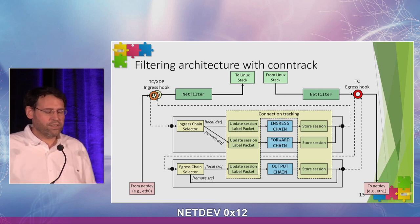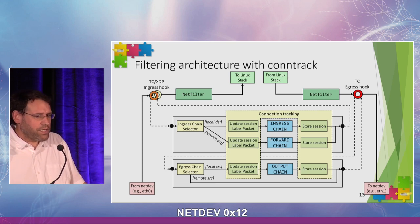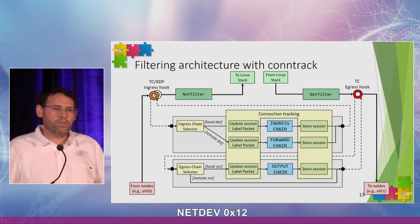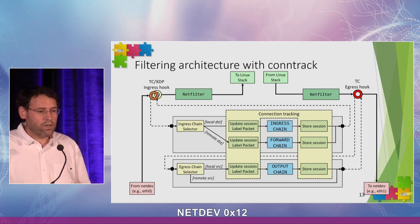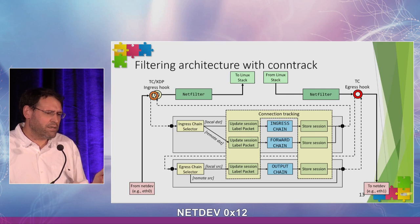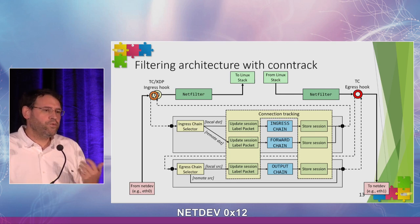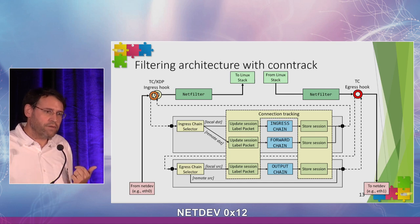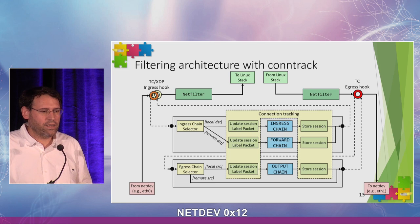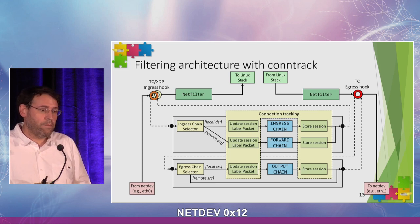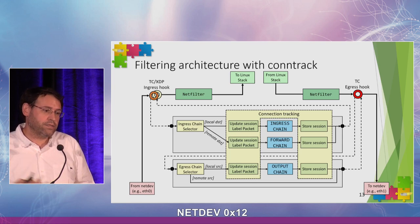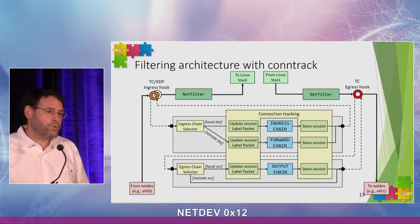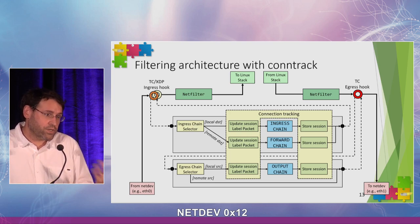When you enable connection tracking, you enable those blocks on both ingress and egress hooks. Even if you filter only on ingress traffic, connection tracking must work on both incoming and outgoing traffic to follow the TCP state machine. This introduces additional overhead because of the necessity to intercept packets in both ingress and egress directions.